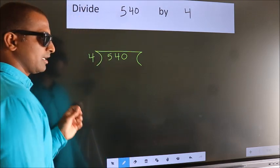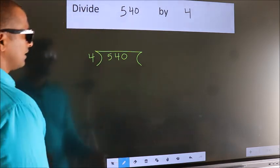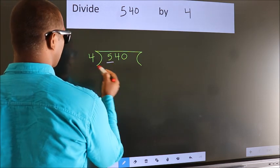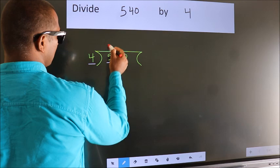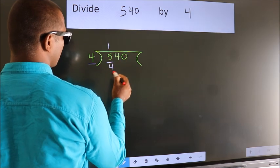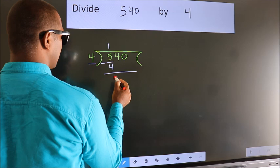This is your step 1. Next, here we have 5, here 4. A number close to 5 in the 4 table is 4 once 4. Now we should subtract. We get 1.